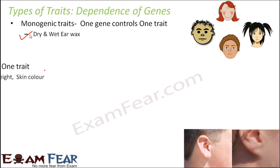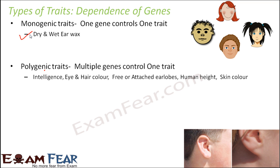The next type is polygenic traits — poly means many — where multiple genes control one trait. For example, intelligence in human beings is not controlled by just one gene; there are multiple genes whose cumulative effect controls it. Similarly, hair color, eye color, free or attached ear lobes, human height, and skin color are all examples of polygenic traits. The inheritance patterns in these cases are not simple — there could be two, three, five, or many more genes, each making a small contribution, and their cumulative effect produces the trait.